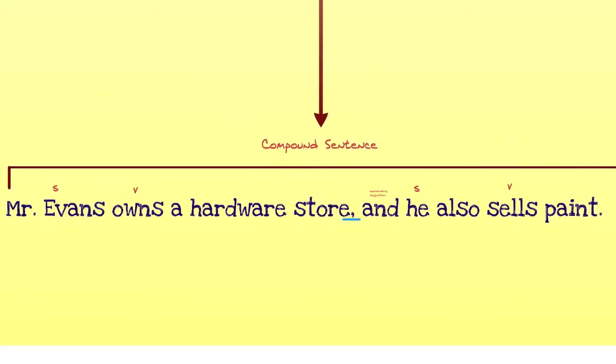That is how you merge two simple subjects together into one compound sentence using a coordinating conjunction.